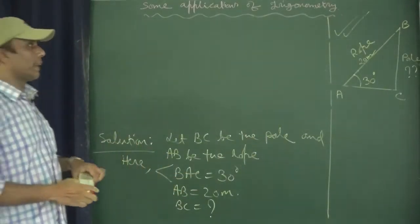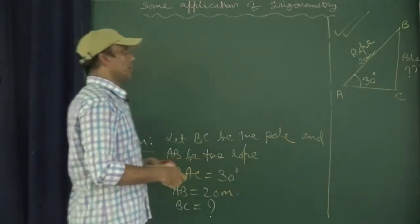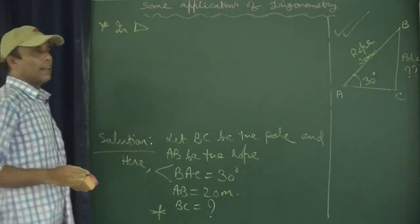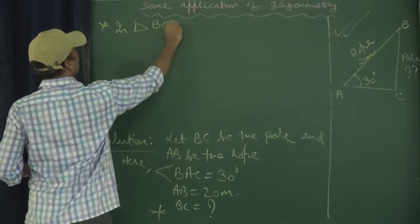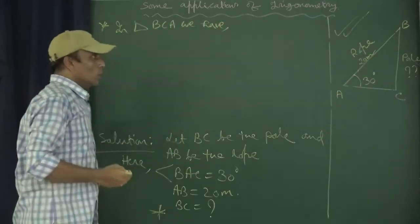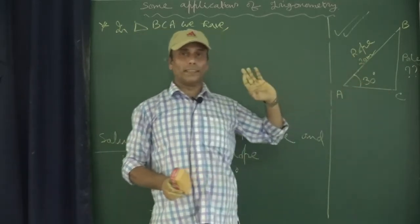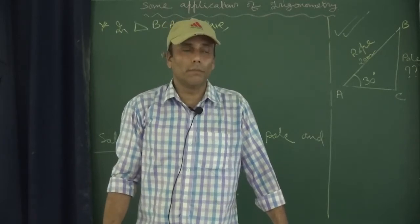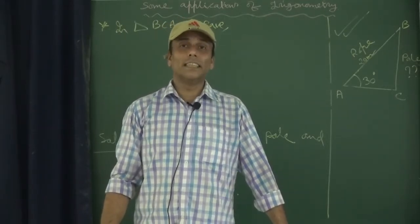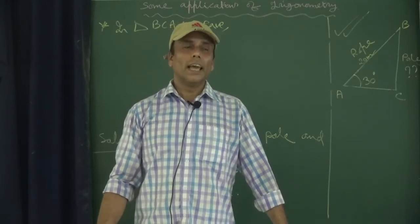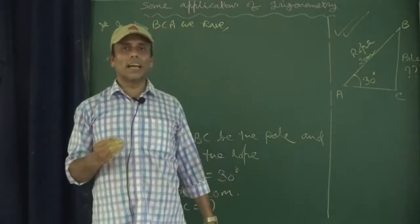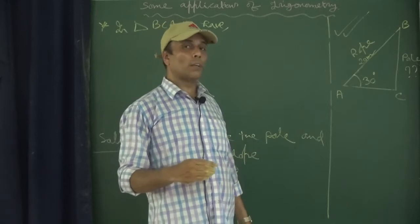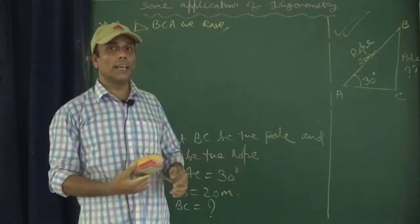In right triangle BCA, we need to decide which trigonometric ratio to use. In trigonometry we have sin theta, cos theta, tan theta, cot theta, sec theta, and cosec theta. We will choose from sin theta, cos theta, or tan theta depending on what is given and what is asked to find.